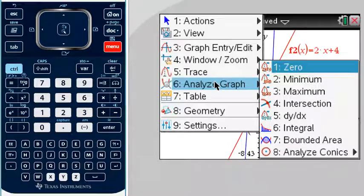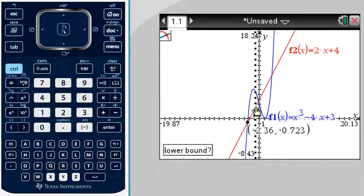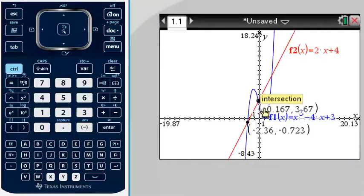Now we'll find the other one. Do the lower bound and upper bound of that middle one there. Okay, so it's negative 0.167, 36.67.